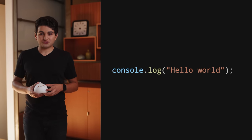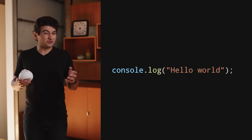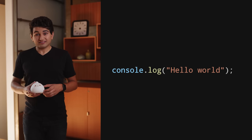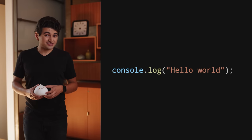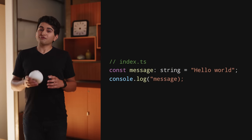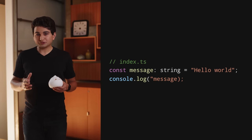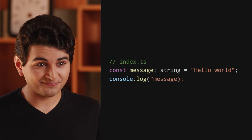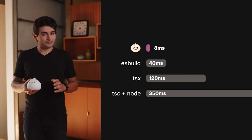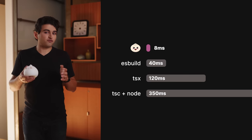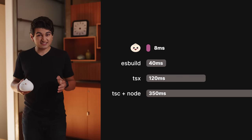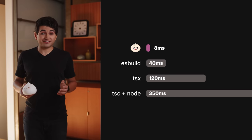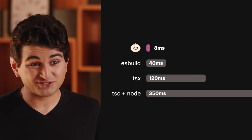If we run a simple Hello World script, it takes BUN only 8 milliseconds. In Node.js, it takes 32 — that's a 4x difference just to say hello. And if we're running TypeScript, things get a little trickier. We need to transpile our TypeScript file before we can even run it. With ESBuild, the time to build and run takes about 40 milliseconds. With TSX, that's 120. And with TSC, it's 350 — that's 45 times slower than BUN.